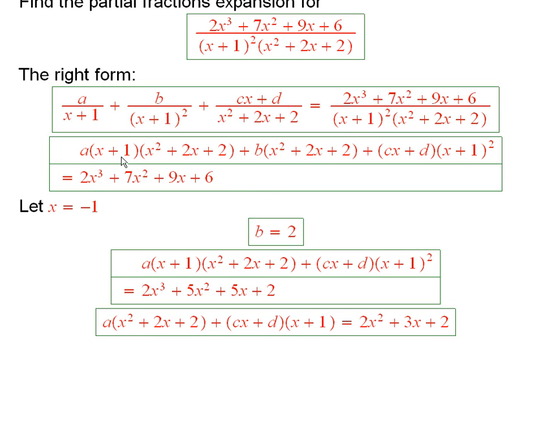First of all, let x equal to negative 1 because if you do, this term will disappear and this term will disappear. And so you'll have b times something equaling something when you plug in x equal to negative 1. So when you do that, you have b times 1 is equal to 2 because 2 is the thing you get when you put a negative 1 wherever you see an x in here. So b is equal to 2. See, I found one of them already.